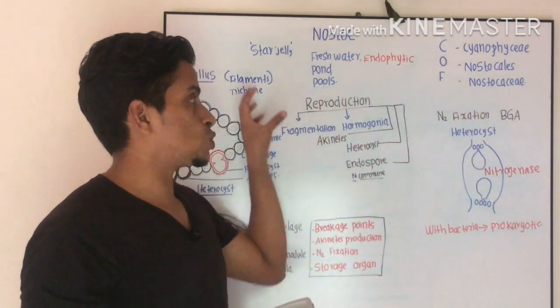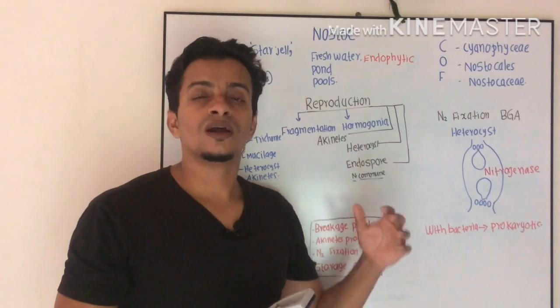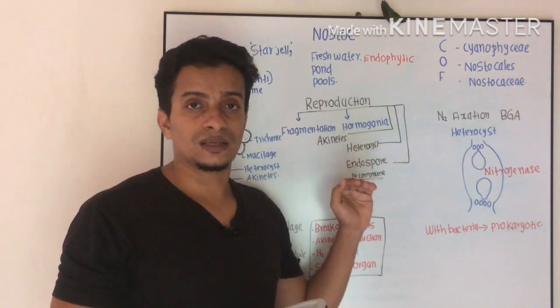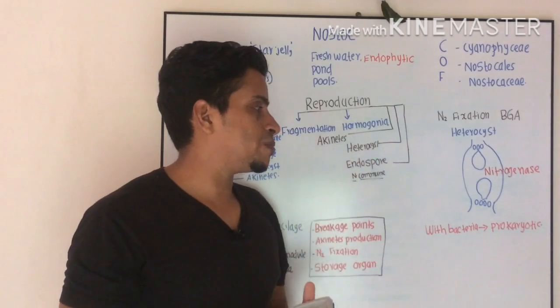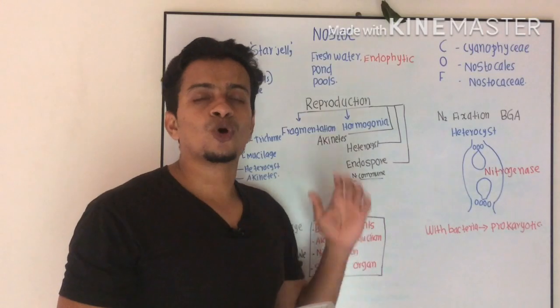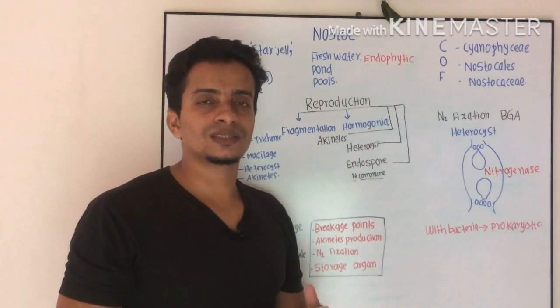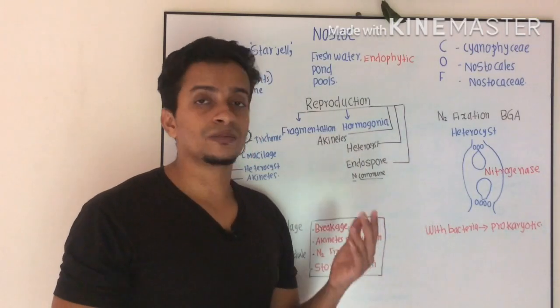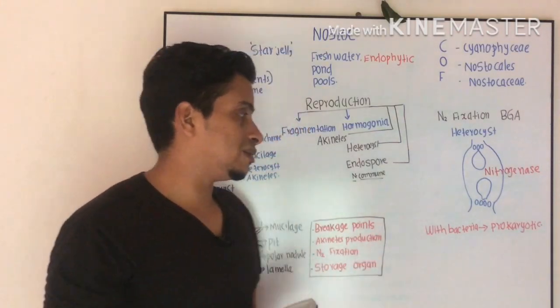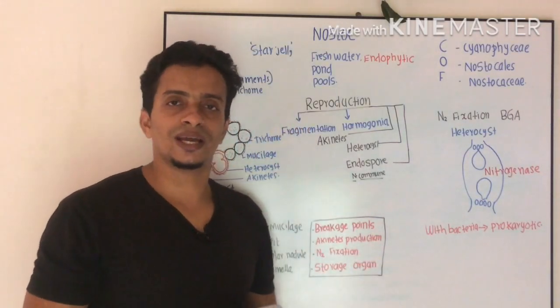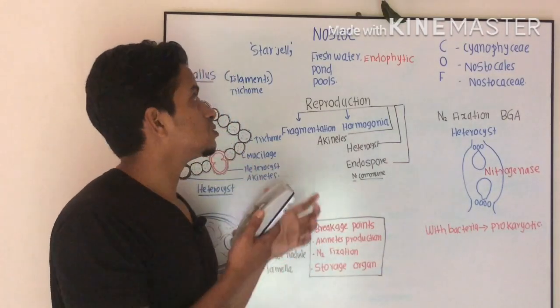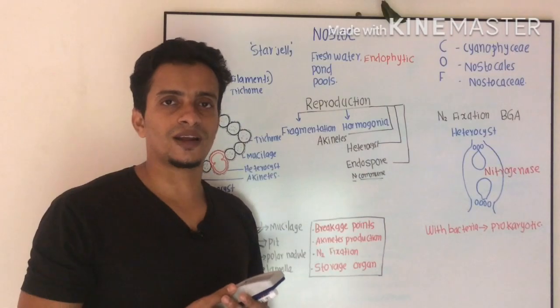Coming to the last point: what is the similarity between bacteria and this blue-green algae? Both are prokaryotes. That means primitive nucleus is present, membrane-bounded cell organelles are absent. In this character, they share similarities with prokaryotic bacteria. This is about Nostoc. Thank you.